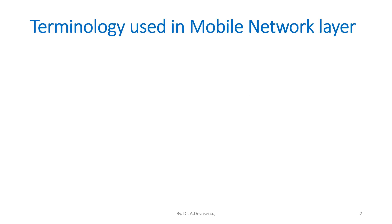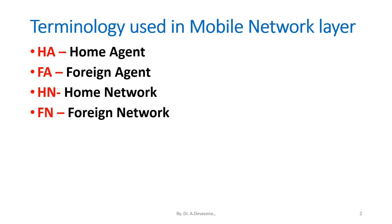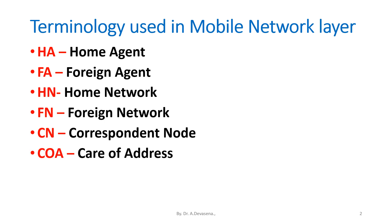Let us see the terminology used in mobile network layer. HA represents home agent, FA represents foreign agent, HN represents home network, FN represents foreign network, CN represents correspondent node, and COA represents care of address. These are the terms frequently used in this mobile network layer.